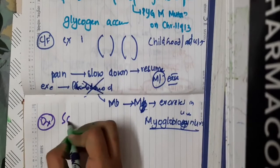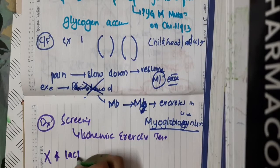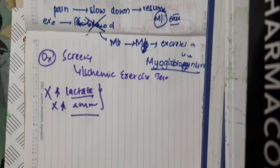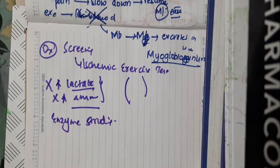For diagnosis, you can do a screening test — the ischemic exercise test can be used. If there is no increase in blood lactate and no increase in ammonia, then you can rule out liver issues, and you can think that it is due to a muscle defect. Enzyme studies can also be done for diagnosing McArdle's disease.